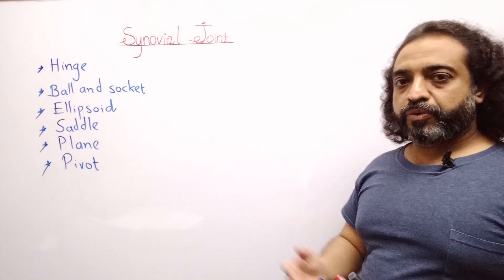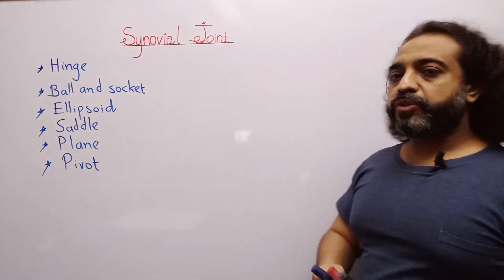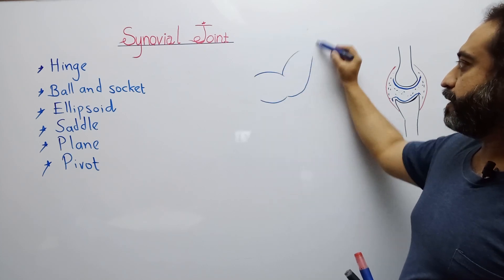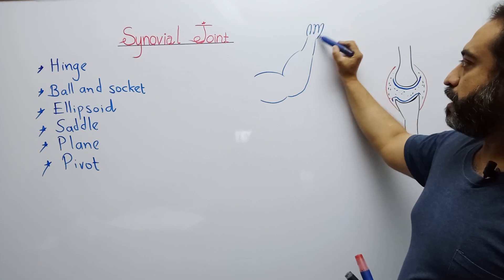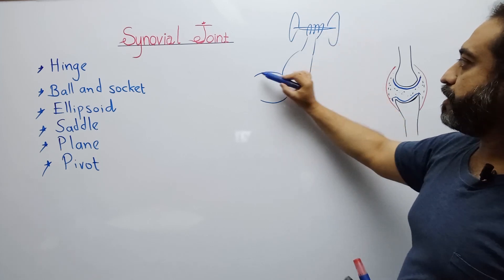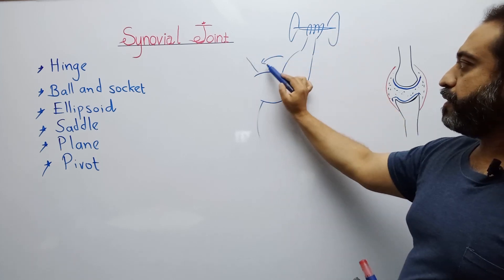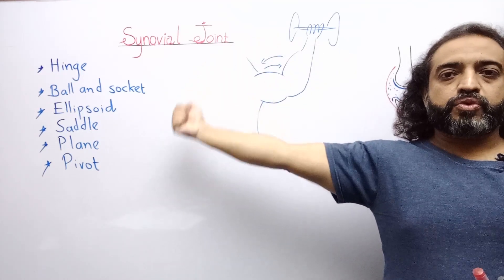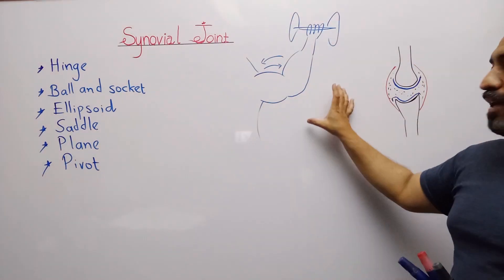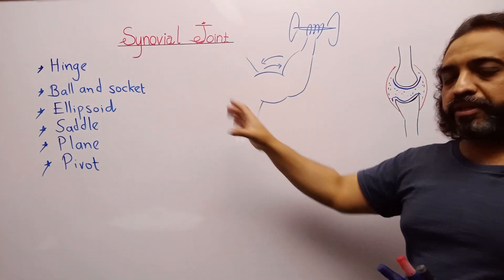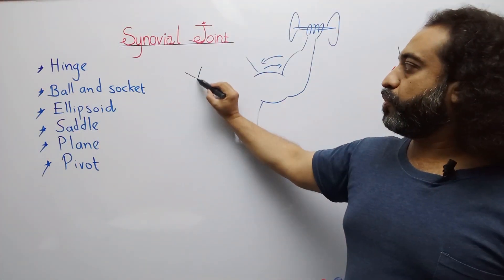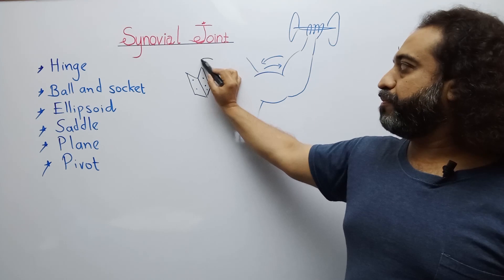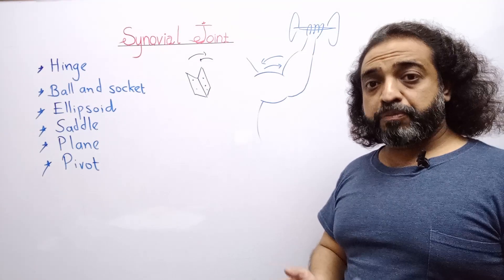First of all, there is the hinge joint. Hinge joint is present in our elbow. It gives us movement only in two directions. For example, when we flex our elbow, there is a single direction of movement, upward and downward. It remains in a single axis. A hinge is basically a structure used in doors for closing and opening. It holds the door with its basic framework and its movement is only in one axis. Our elbow joint and our knee joint are examples of hinge joints.